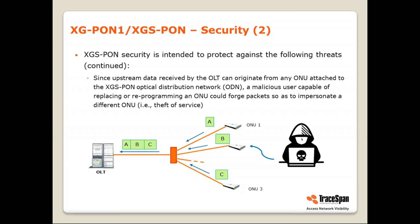The second risk, which is new to the 10G PON technologies, is actually the opposite. The malicious user would connect to an ONU and send packets in the upstream. By doing this, it could forge and impersonate a different ONU — in other words, perform a theft of service.